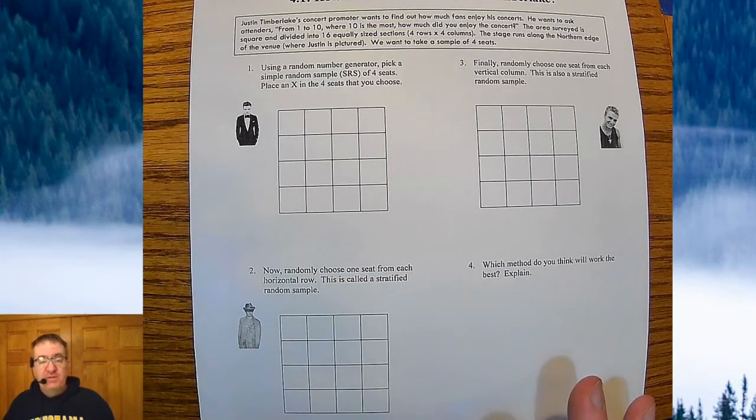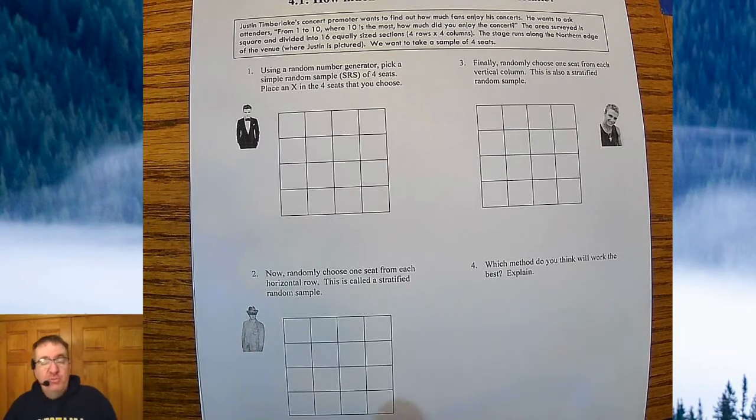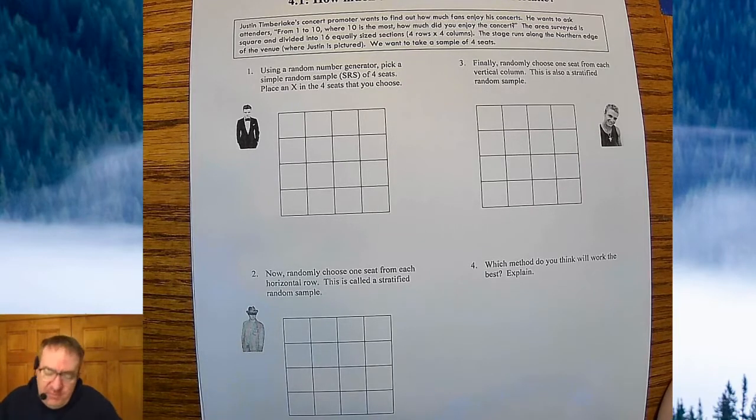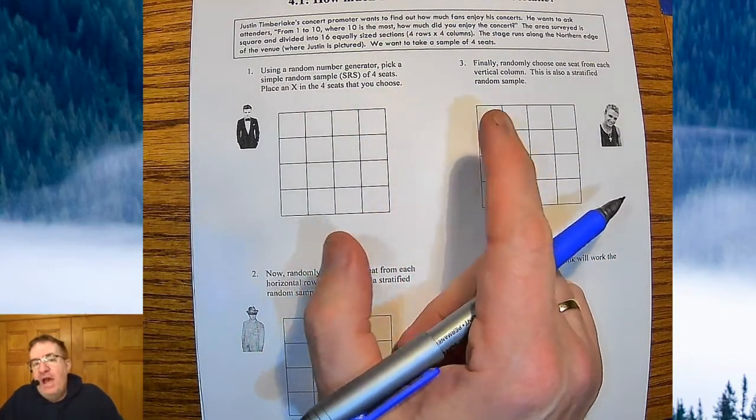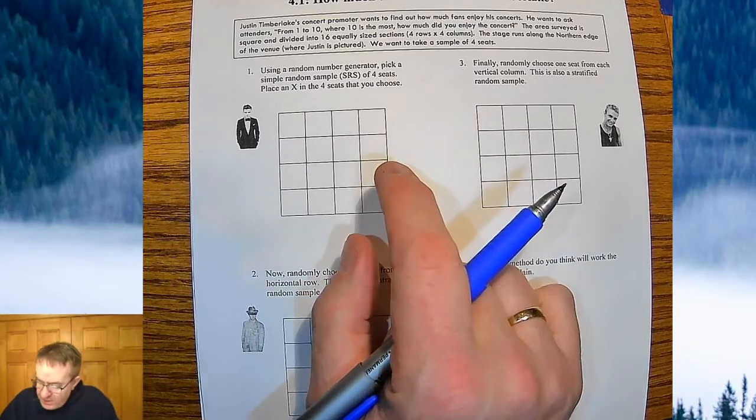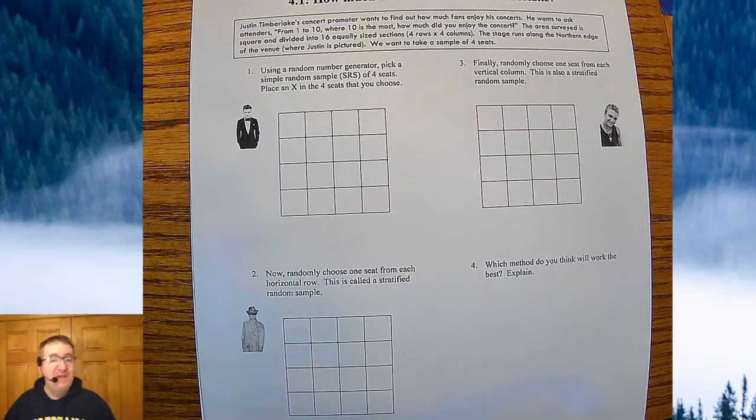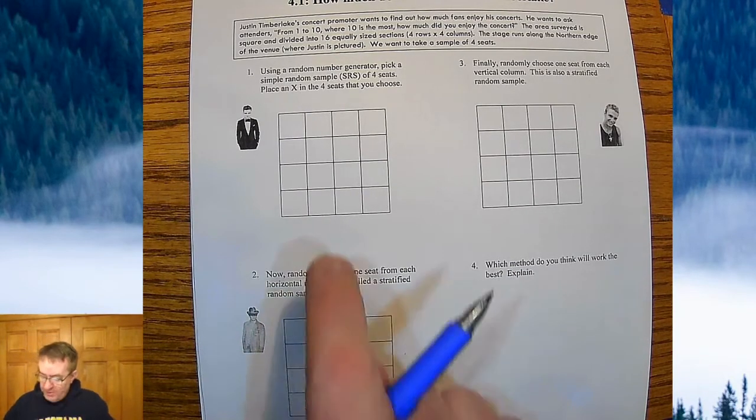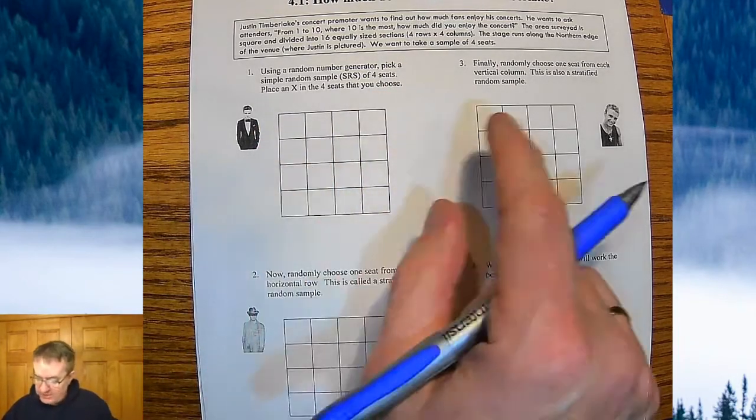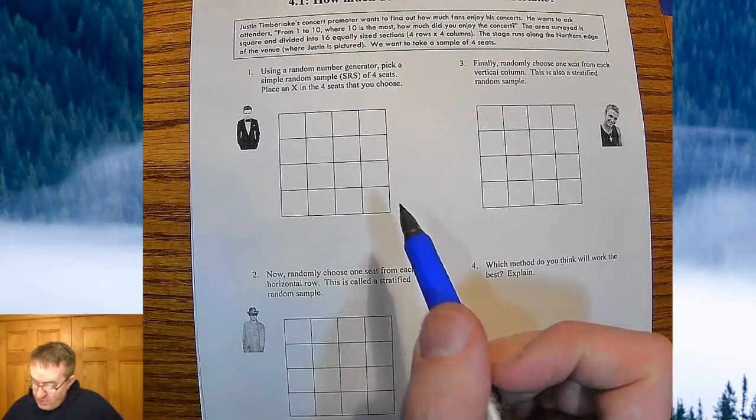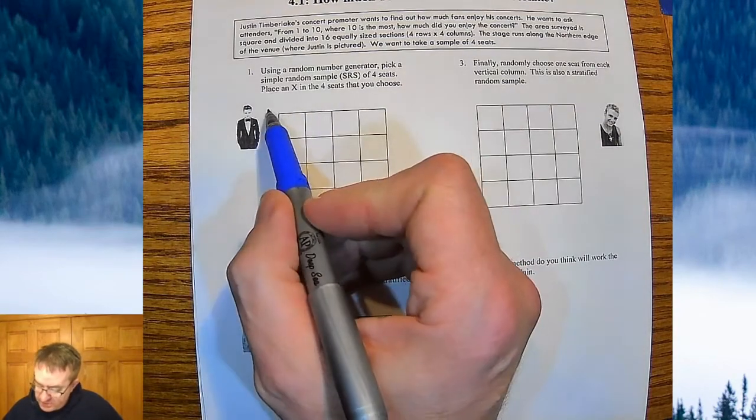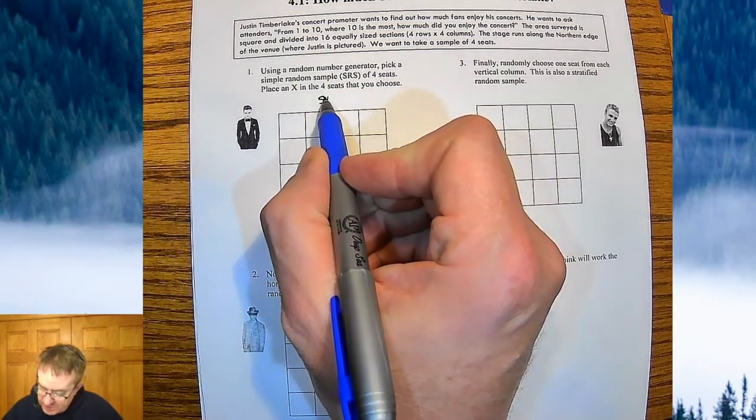So today what we're doing is we're asking the question, how much of a Justin Timberlake fan are you? Or actually probably the better question is how much of a fan is the Justin Timberlake fans of Justin Timberlake? So Justin Timberlake's concert promoter is wanting to know how the concert goers are enjoying the experience. So he wants to ask the attenders from 1 to 10 with 10 being the highest, how much did you enjoy the concert? And so what they ended up doing was they blocked this off into squares and so there's 16 equally sized sections, four rows. Remember rows go across, columns go up and down and the stage runs along the northern edge of this.